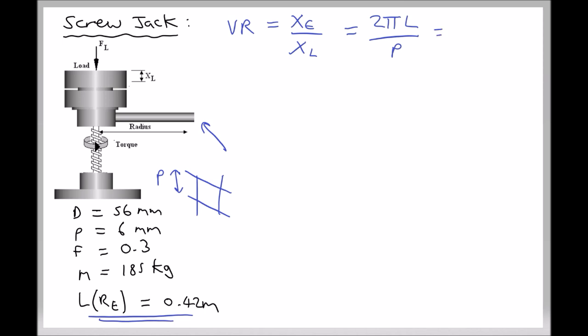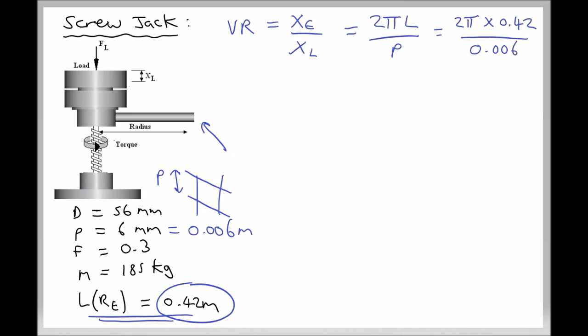We have two pi times the handle length of 0.42 divided by the pitch. We need to take care here because the handle length is in meters and the pitch is in millimeters, so we convert 6 millimeters to 0.006 meters. In the formula, the pitch expressed in meters is 0.006, giving us a velocity ratio equal to 439.82. It's a ratio, so it doesn't require any units.